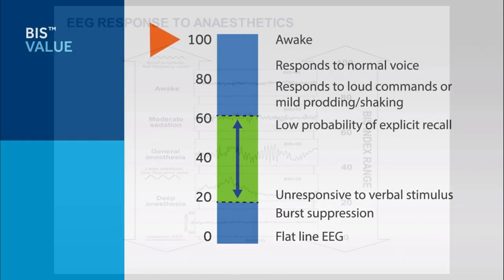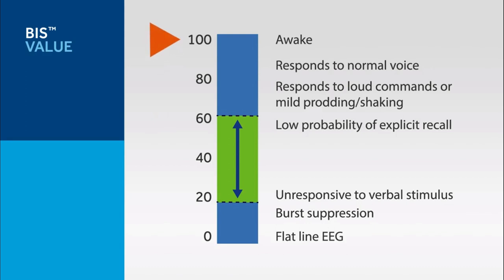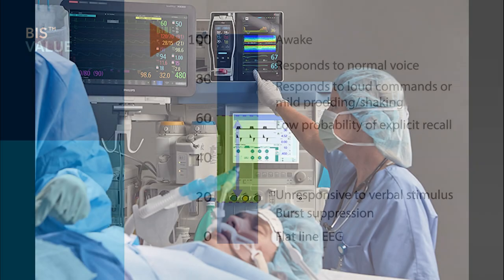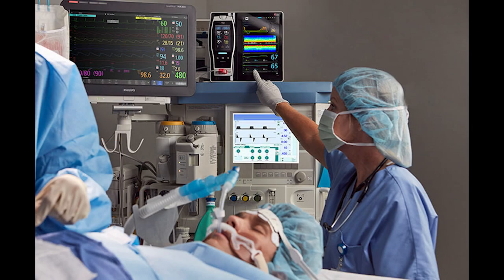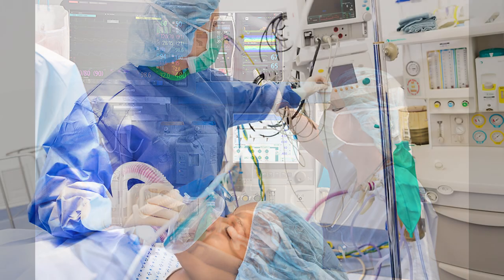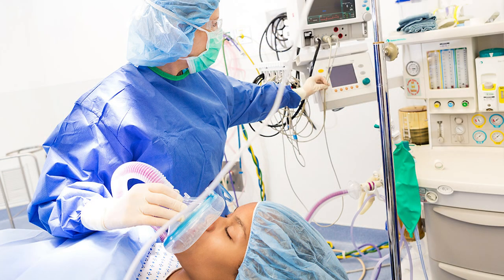The zone of 40 to 60 is most common for normal surgical procedures. Over time, this has become a standard in operating rooms because it shows that a patient is properly sedated — without over-sedation or under-sedation. Due to the variety of patient health conditions and physiologies, anesthesiologists can customize anesthesia delivery to the specific patient.